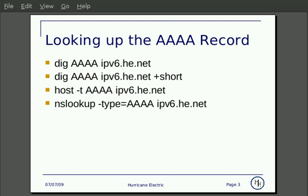Looking up the record under Linux, you can use DIG, host, or nslookup. With DIG, it will by default give you full output. If you simply just want it to report the answer to your query, use plus short. With host, you specify the type of record with dash t. With nslookup, to specify the record, you use dash type equal, and then the type of record.